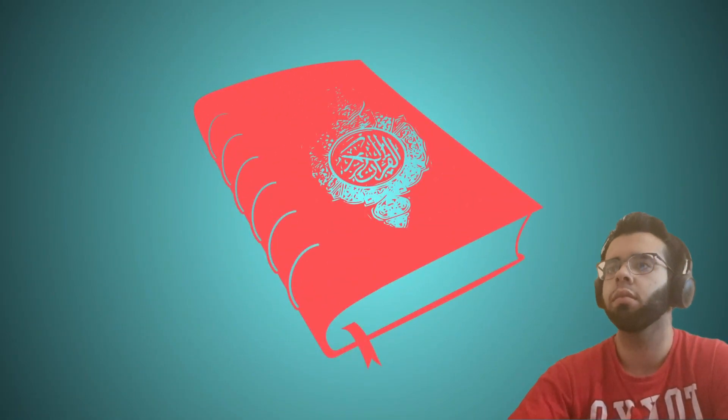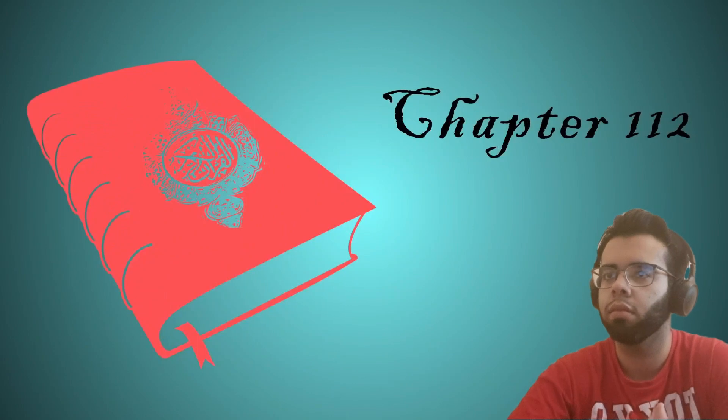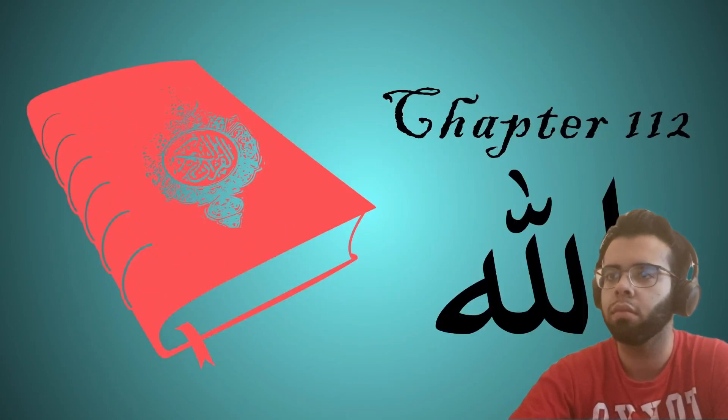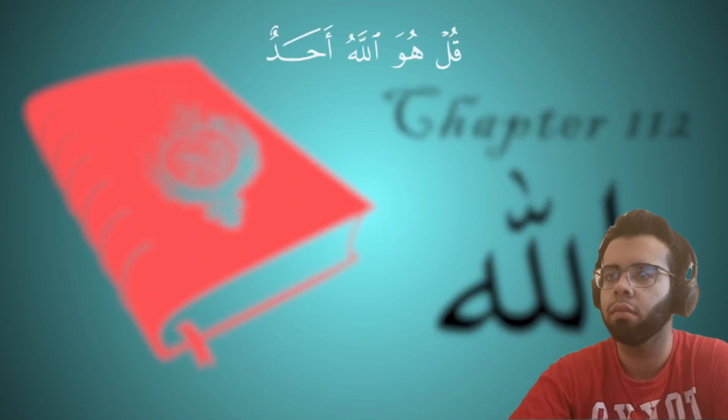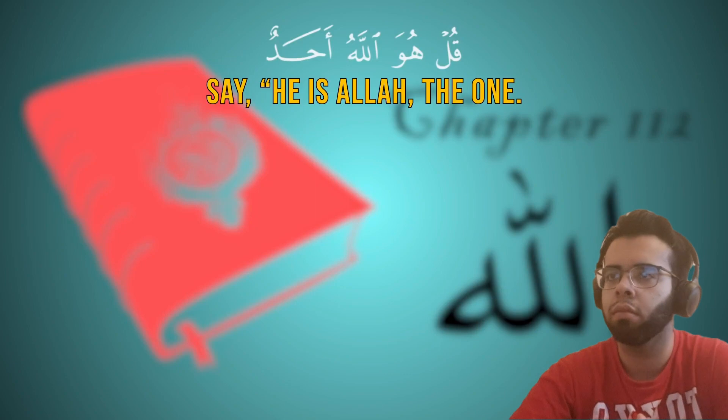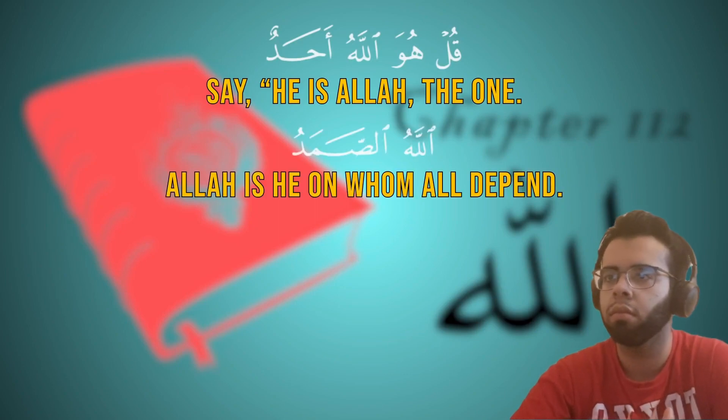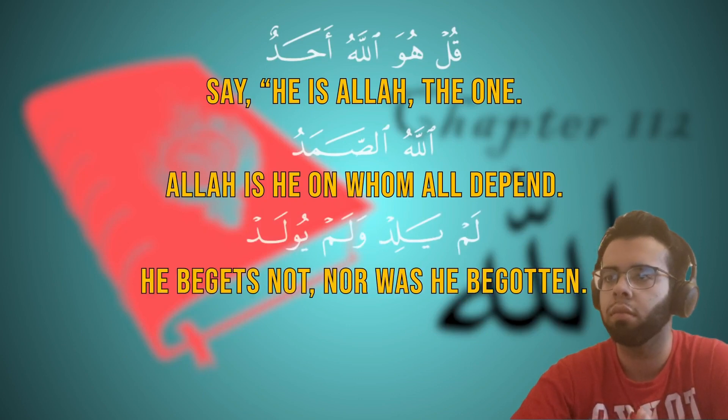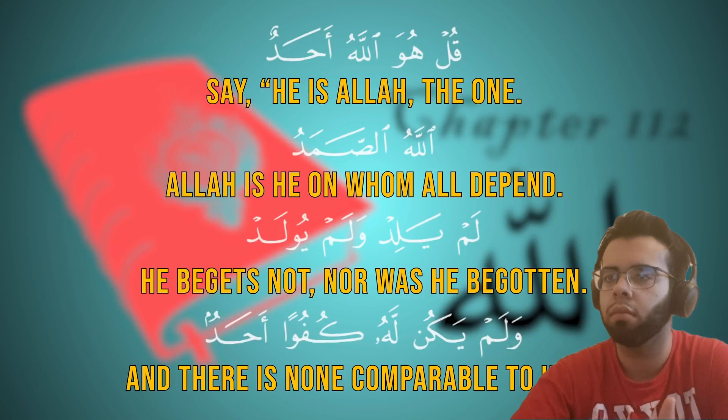So how does the Quran relate to all of this? The 112th chapter of the Quran defines this independent, eternal existence as Allah. Say, he is Allah, the one. Allah is he on whom all depend. He begets not, nor was he begotten. And there is none comparable to him.